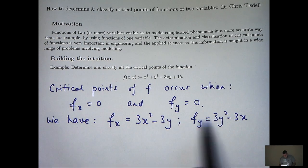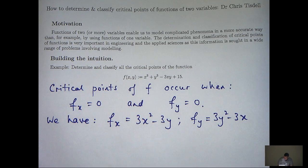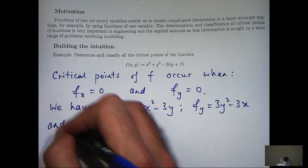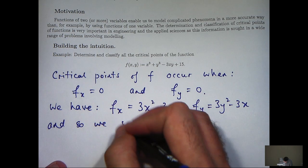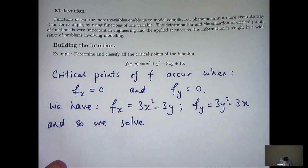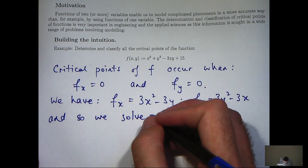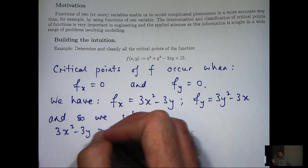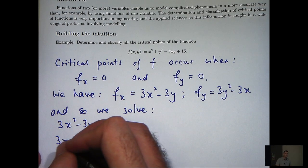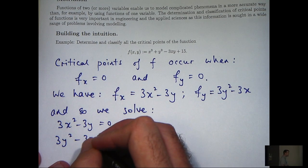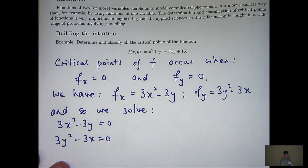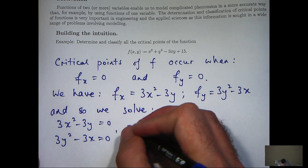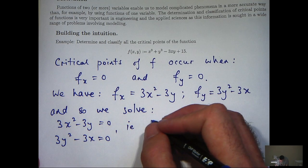So let's set these two derivatives equal to zero and then solve. Now here I can cancel off the threes and rearrange to get the following.